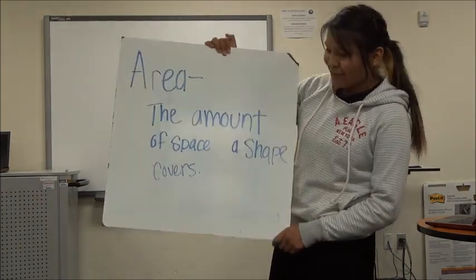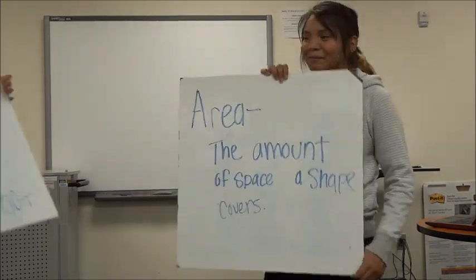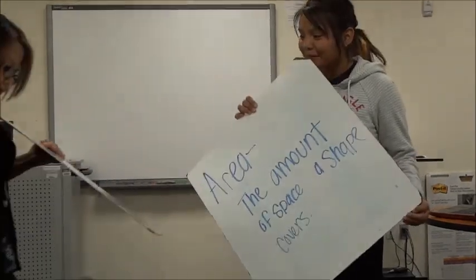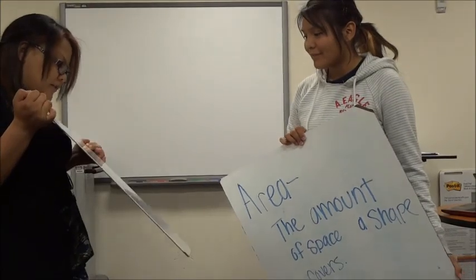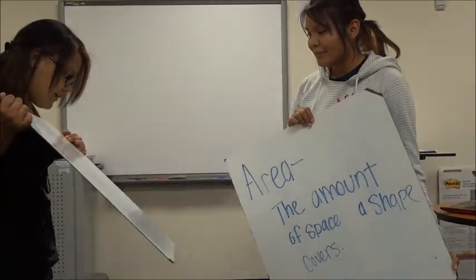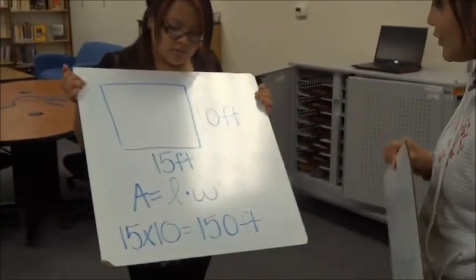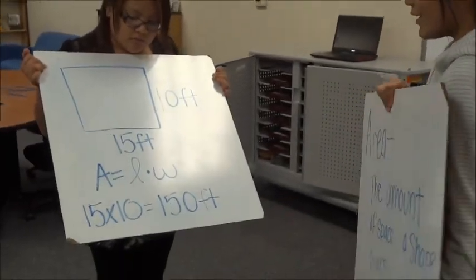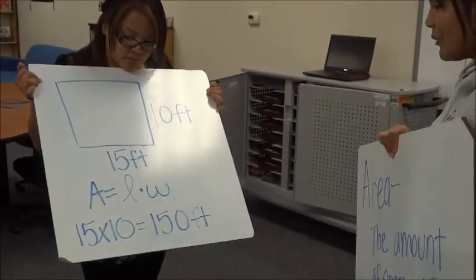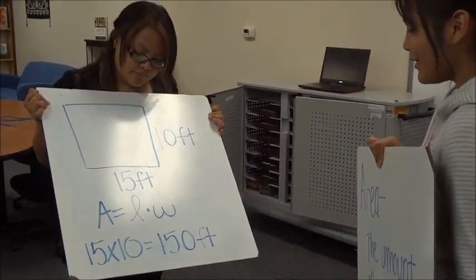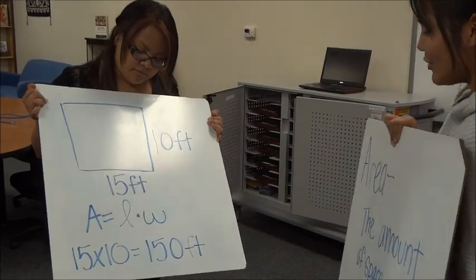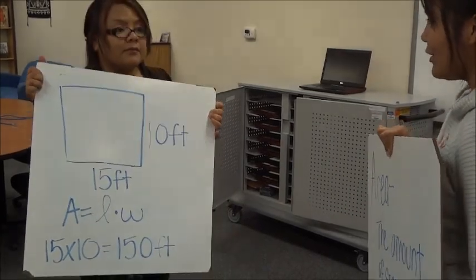Space and shape covers area. Pamela, what is the area of a square if the length is 10 feet and the width is 15 feet? Use area. Area equals length times width. So 15 times 10 equals 150 feet. Good job.